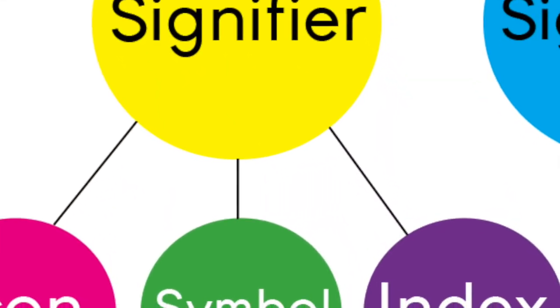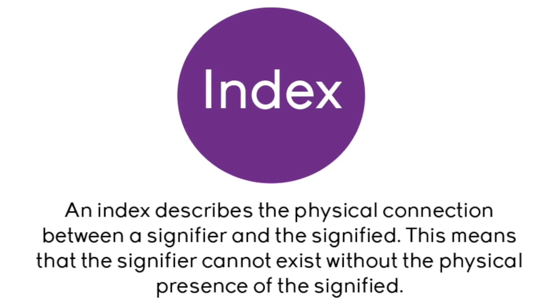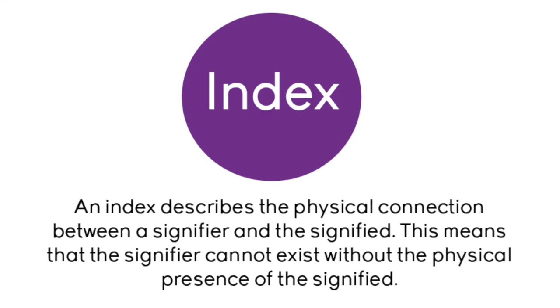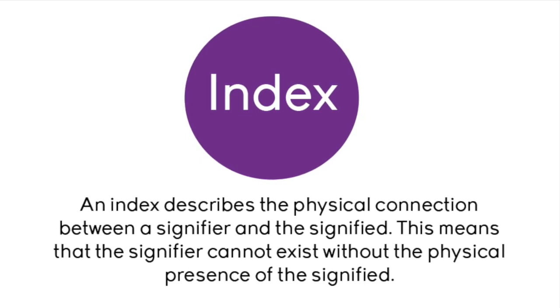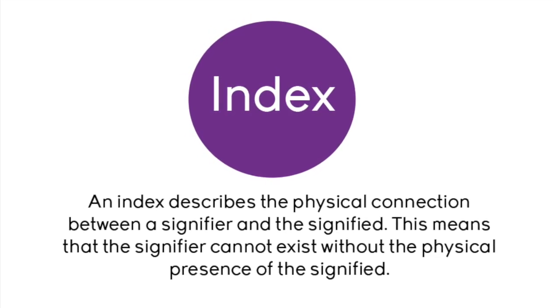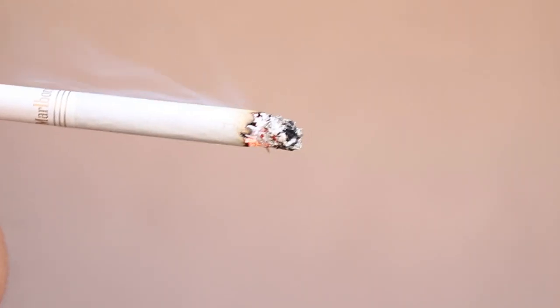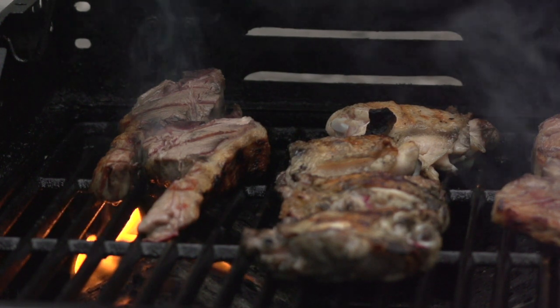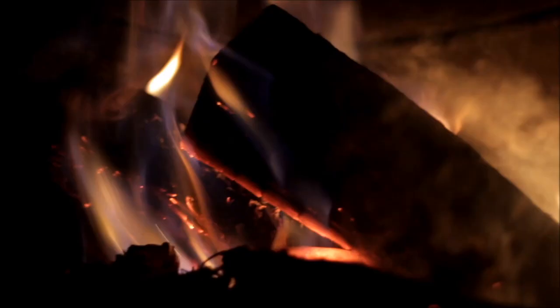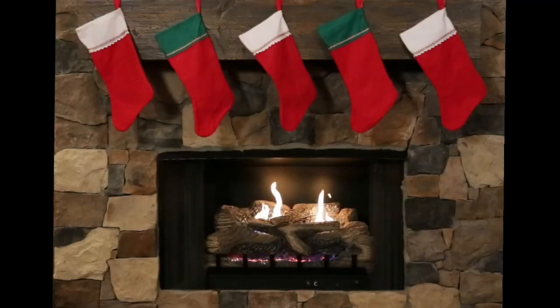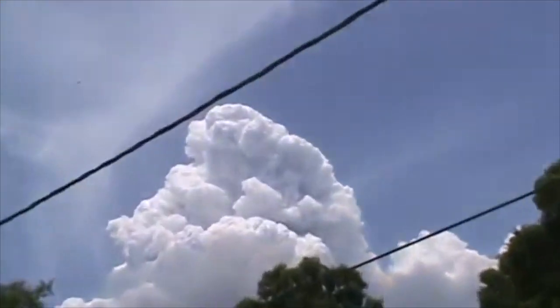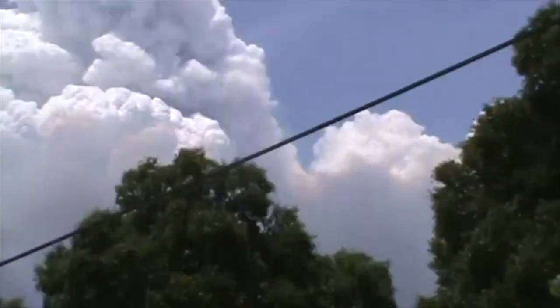Lastly, we have indexes. An index describes the physical connection between a signifier and the signified. This means that the signifier cannot exist without the physical presence of the signified. For example, smoke cannot exist without fire. Within this example, the signifier is smoke, which leads to the signified being fire. If we saw a big cloud of black smoke in the distance, the concept that typically comes to mind is that it's coming from a fire.